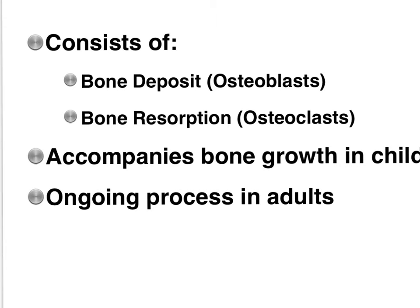In adult bones, bone remodeling consists of bone deposits, which you know is done by our osteoblasts who secrete osteoid, and bone resorption — or bone reabsorption — meaning the osteoclasts digest the bone tissue.